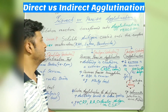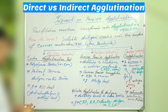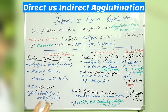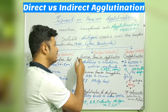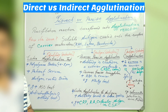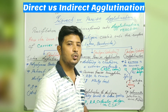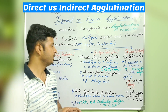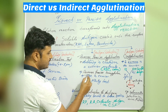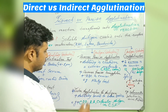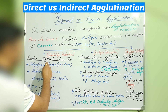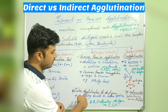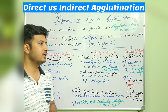The indirect passive agglutination test is divided into three processes depending on what it detects. The first is the latex agglutination test, the most widely used, which detects the antibody in the patient's serum. The second is the reverse passive agglutination test, which detects the antigen in the patient's serum. The third is the co-agglutination process, where bacteria is used as a carrier molecule.